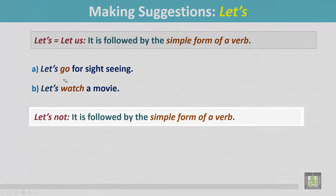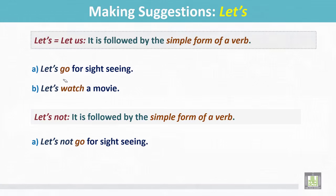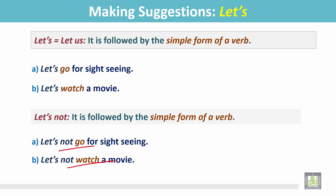'Let's not' is the negative form. It is also followed by the simple form of a verb. For example: 'Let's not go for sightseeing.' 'Let's not watch a movie.' In both sentences the subjects are imperative and the verbs are in the simple present form.